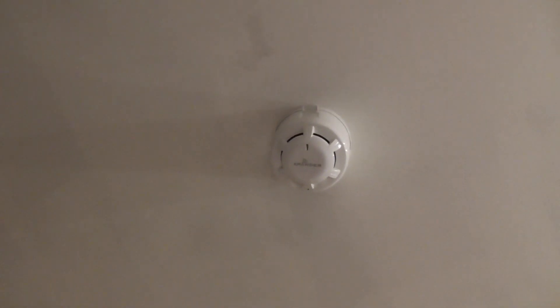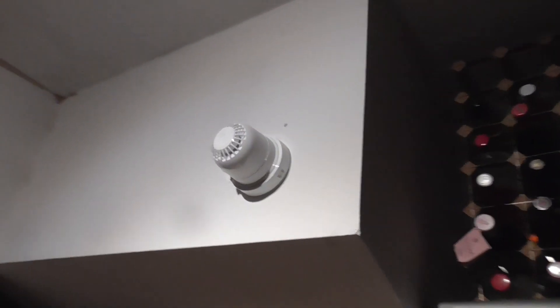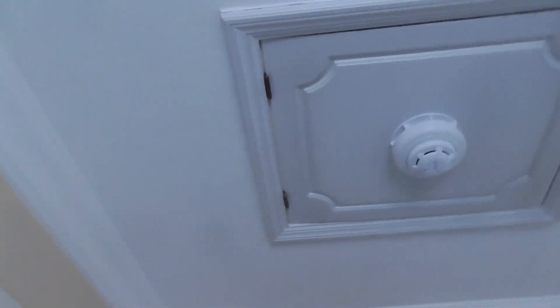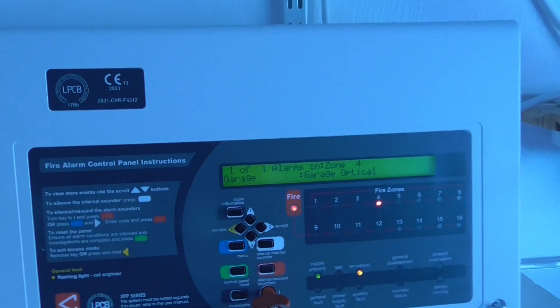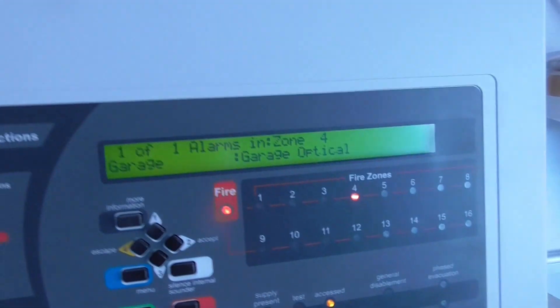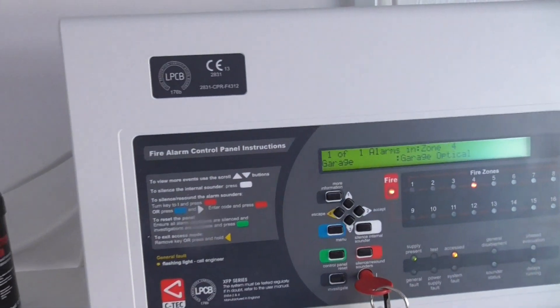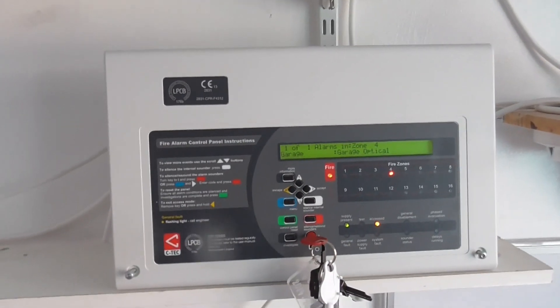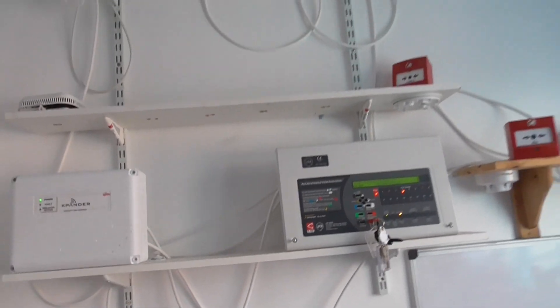There we go, we can see the pre-alert on the panel. As you can see, one of one alarms in zone four which is the garage and we have the garage optical detector. We'll go ahead and let that sit for a bit because it might go off again. We'll go and test the intelligent call point, so we're going to test the detector in my room. We're going to only test the smoke bit of the detector.